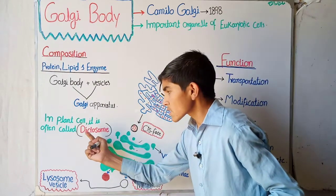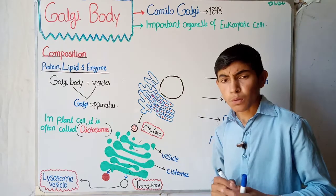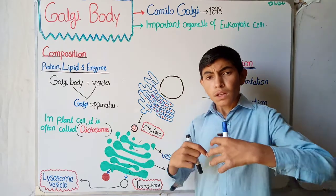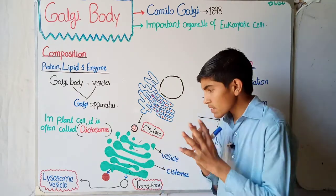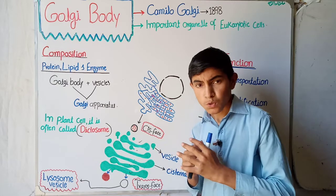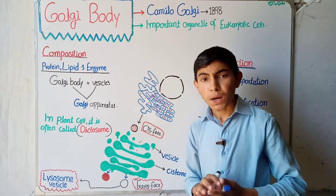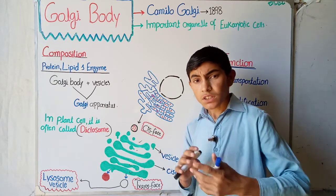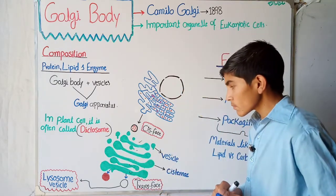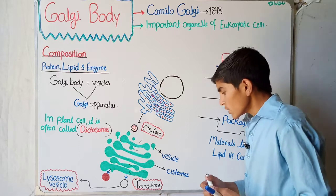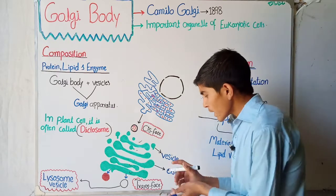In the plant cell, the Golgi body is often called the dictosome. So mainly the Golgi body of the plant cell is called the dictosome.